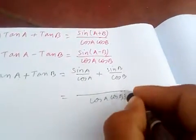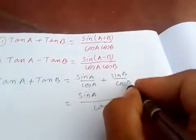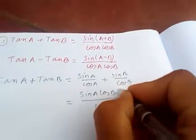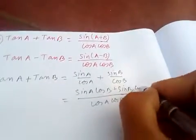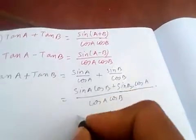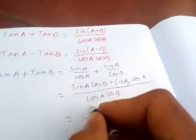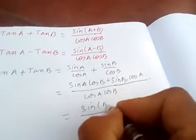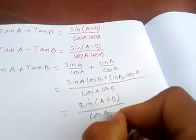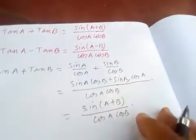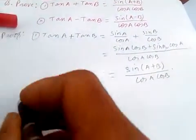That gives us sin(a)·cos(b) + sin(b)·cos(a) over cos(a)·cos(b), which is sin(a+b) / (cos(a)·cos(b)). So that proves identity number one.